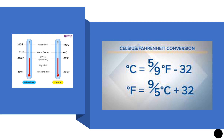Celsius and Fahrenheit scales are examples of interval scales. In the Celsius system, the starting point is zero degrees — the freezing point — and the terminating point is 100 degrees Celsius, the boiling point. The gap between the freezing and boiling points is divided into 100 equally spaced intervals. In the Fahrenheit system, the freezing point is 32 degrees and the boiling point is 212 degrees Fahrenheit, with the gap divided into 180 equally spaced intervals. Each degree or interval is a measurement of temperature.